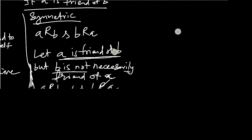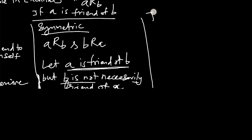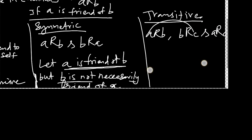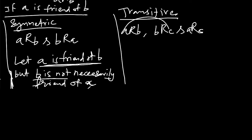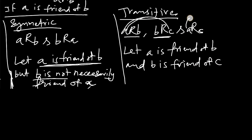Now let's check if it is transitive. Transitive property means if A related to B and B related to some C, then A related to C should be true. Let A is friend of B, and B is also friend of C.